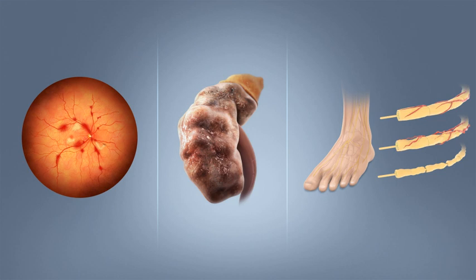The word diabetes comes from Latin diabetes, which in turn comes from Ancient Greek, literally meaning 'a passer through' or 'a siphon.' Ancient Greek physician Aretaeus of Cappadocia used that word with the intended meaning 'excessive discharge of urine' as the name for the disease. Ultimately, the word comes from Greek diabainein, meaning 'to pass through,' which is composed of dia, meaning 'through,' and bainein, meaning 'to go.'